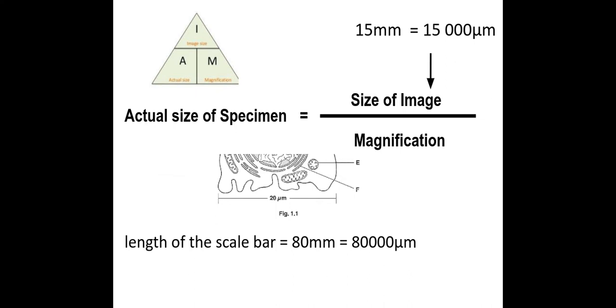80 millimeters is equal to 80,000 micrometers and I know that that bar there represents 20 micrometers. So therefore if I do 80,000 micrometers over the 20 that will give me a magnification of 4,000.